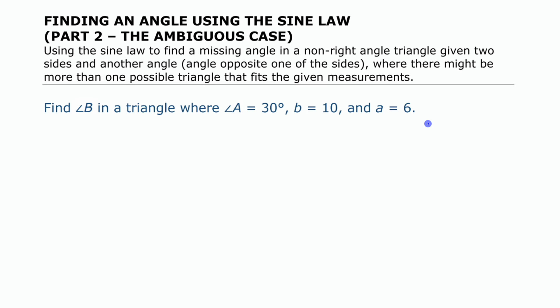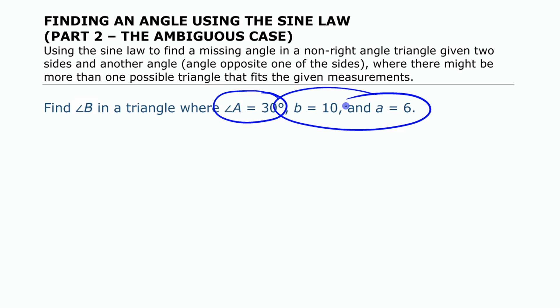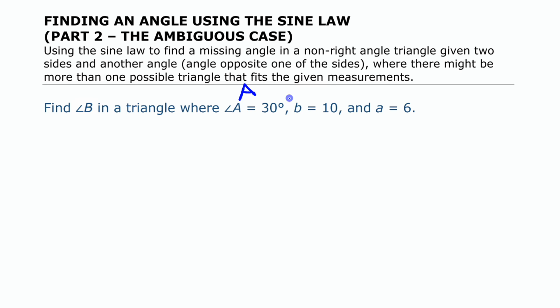The information we have here gives us a situation where we have the ambiguous case of the sine law. In other words, there are actually two possible ways that you can draw the triangle. Since we don't see the triangle and just have the information, we have to draw it ourselves. We have one angle and two sides, and the angle is not the one between the two sides — so we have angle, side, side.